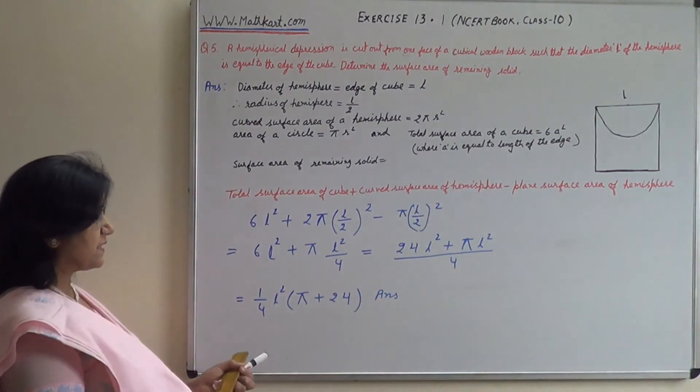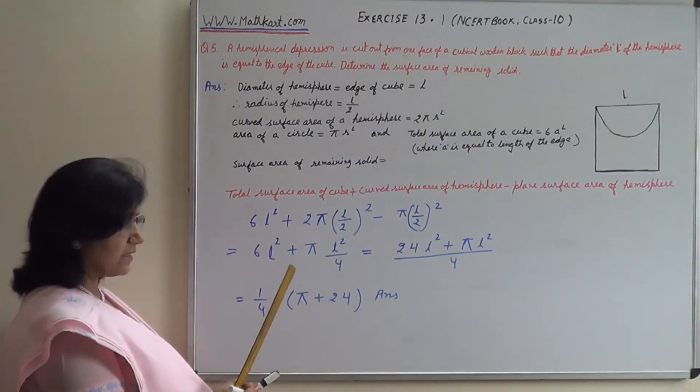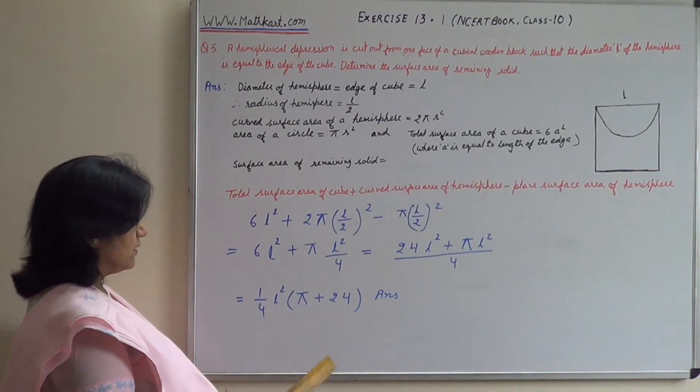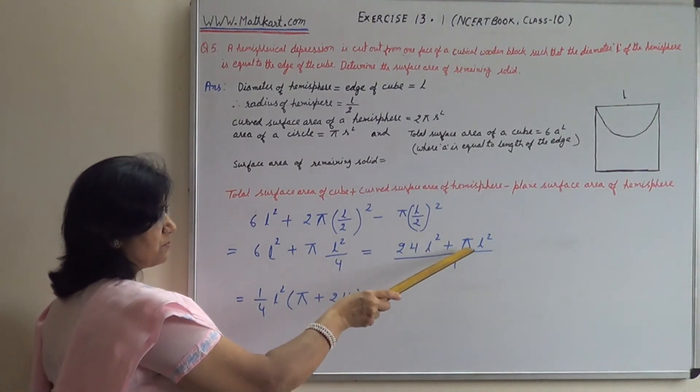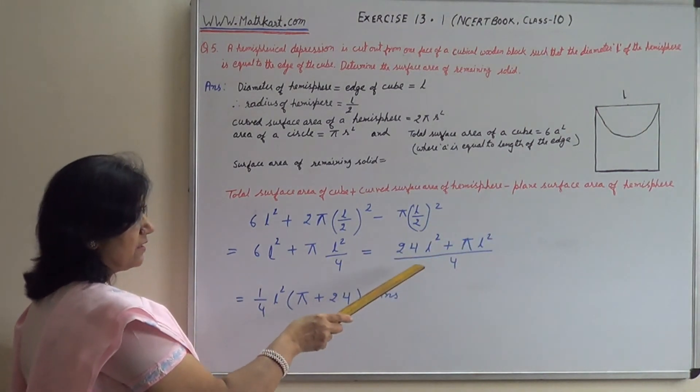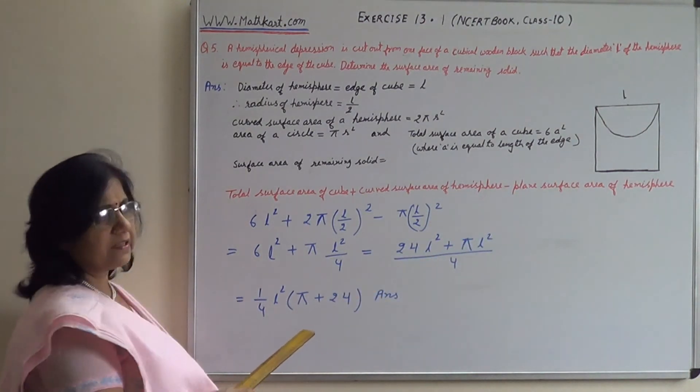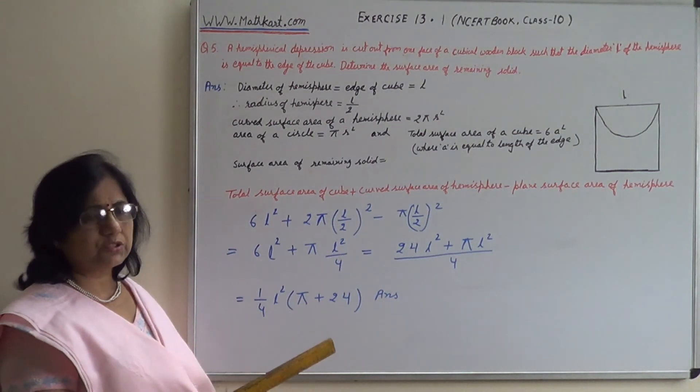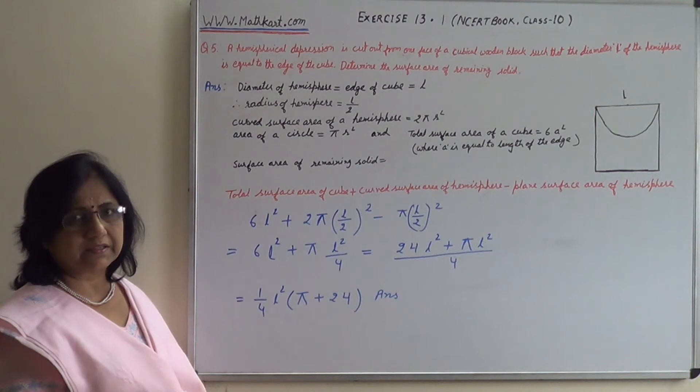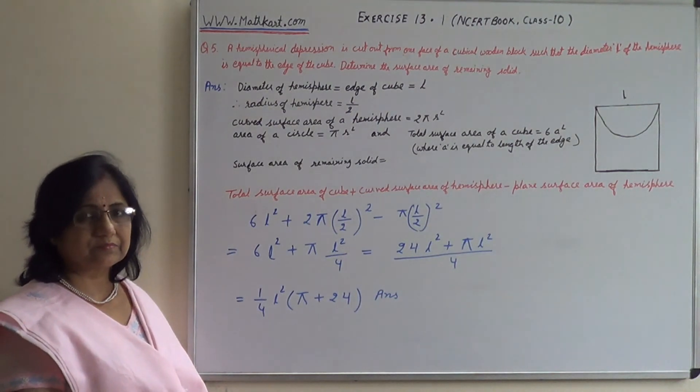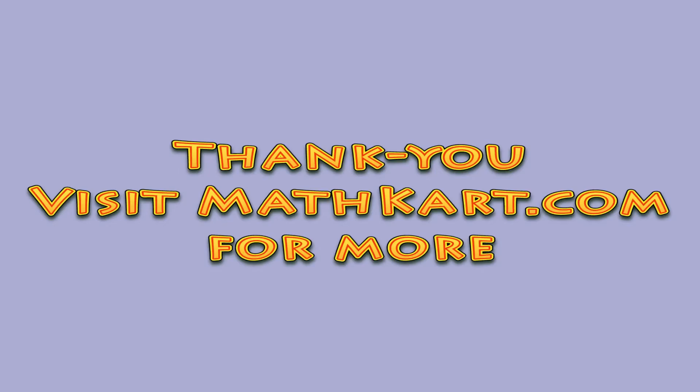So very simply these questions are solved. There's no need to be scared looking at them. Here I've written 24 L squared plus pi L squared. Here I've written pi first - it will go here.